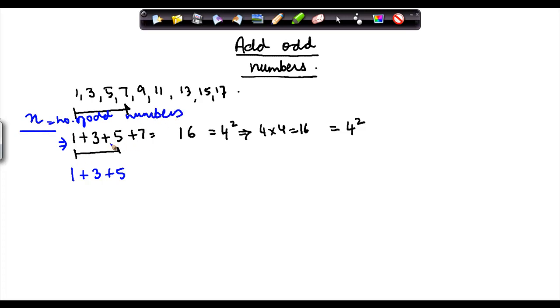How many odd numbers did I add here? I added 4 consecutive odd numbers, so n equals 4. Here n equals 3. 1 plus 3 plus 5 equals 9, but 9 is also equal to 3 squared. We know this from our experience.